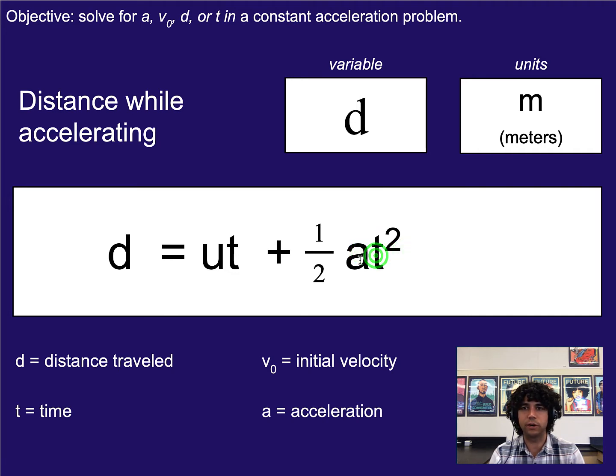Now, note that only time is squared, not the acceleration. The other thing to note is that we will use u for initial velocity, but sometimes we use v naught or v with a little subscript of zero.